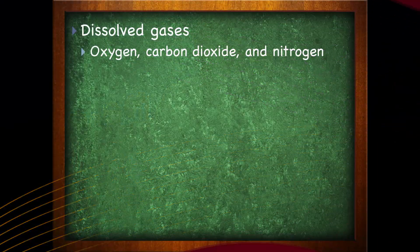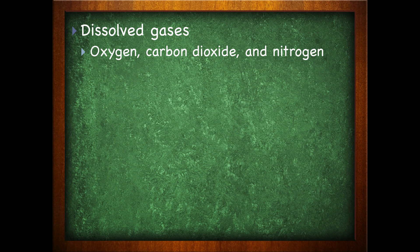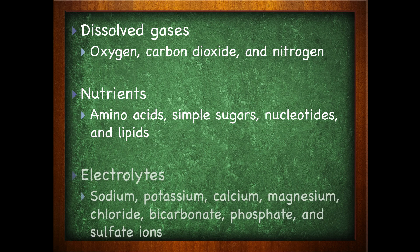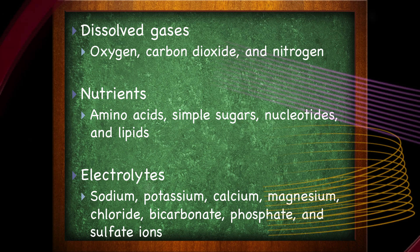There are some other substances we can find in plasma. For example, dissolved gases such as oxygen, carbon dioxide, and nitrogen. We also have nutrients, including amino acids, simple sugars, nucleotides, and lipids. We also have electrolytes such as sodium, potassium, calcium, magnesium, chloride, bicarbonate, phosphate, and sulfate ions.